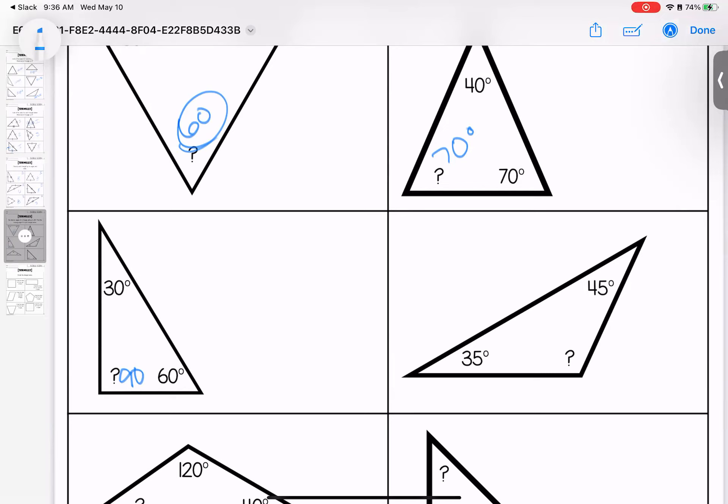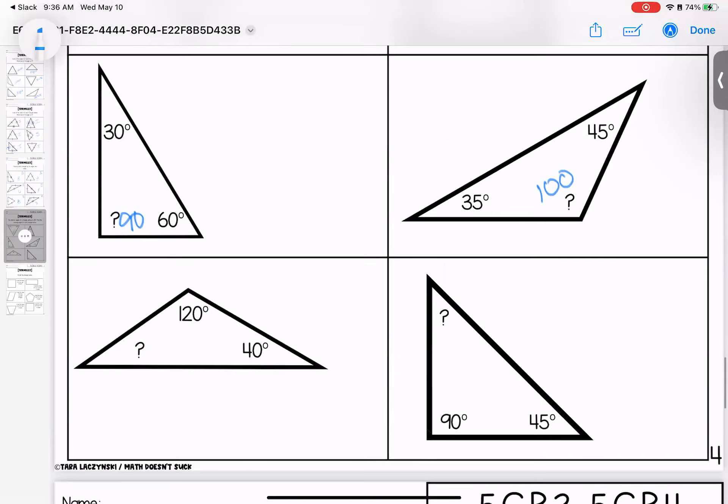Over here, 35 plus 45 is 80, which means we have a hundred degrees missing. 120 plus 40 is 160. 160 take away 180 leaves 20 degrees missing. And here, 90, 45, and 45. Questions, don't hesitate to bring them to class.